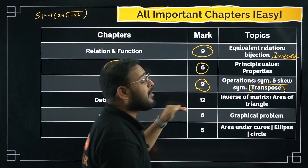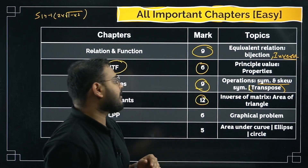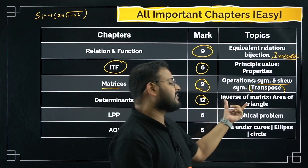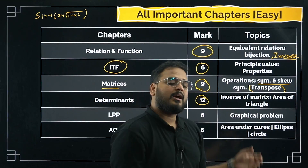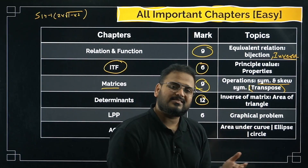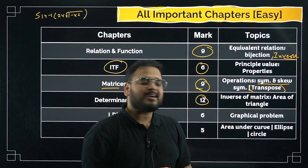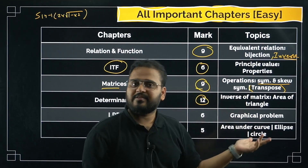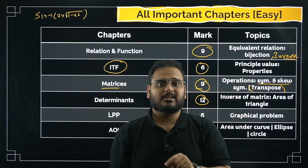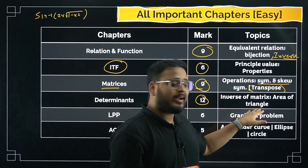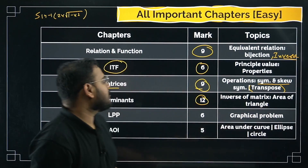Determinants — 12 marks, the third highest weighted chapter. Key topics: inverse of a matrix — they give you a set of linear equations with three variables and ask you to find x, y, z using the inverse method (find the adjoint carefully); and area of triangle using determinants, which also keeps coming as 3-marker or 2-marker questions.